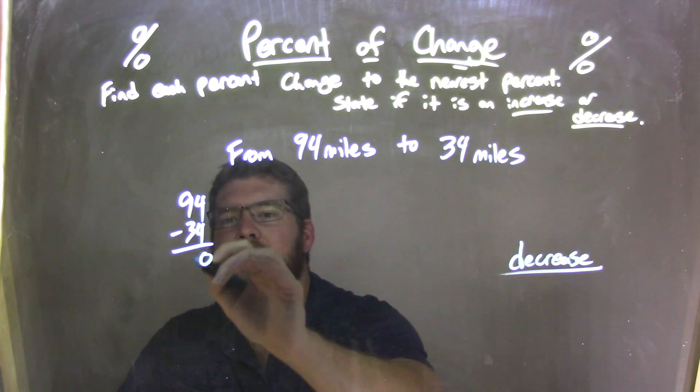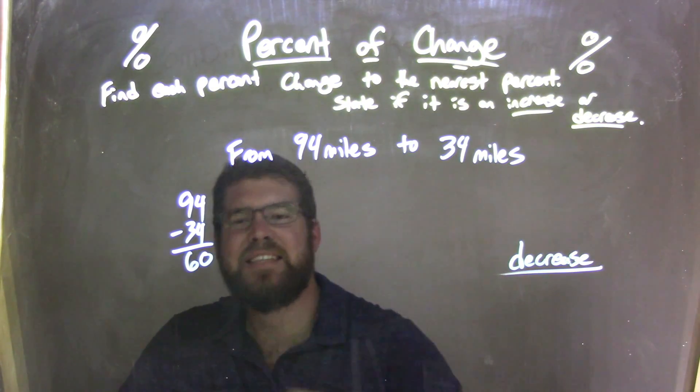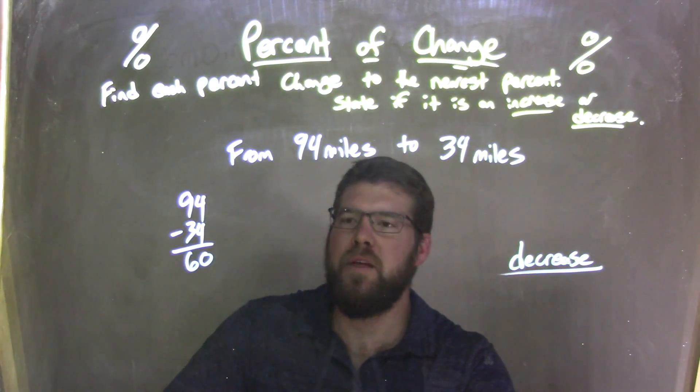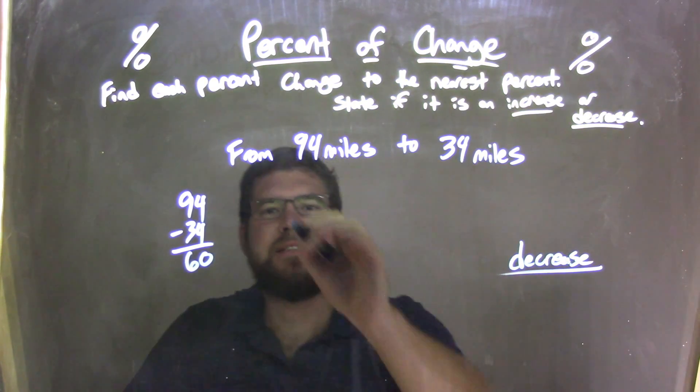4 minus 4 is 0, 9 minus 3 is 6, so we have a 60-mile difference between these two values.